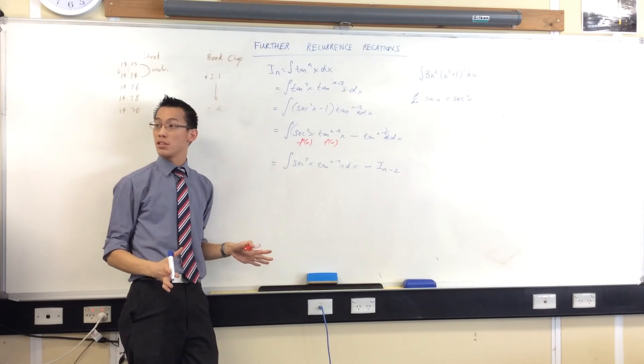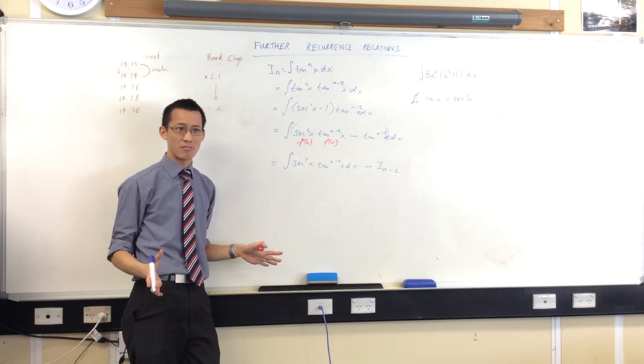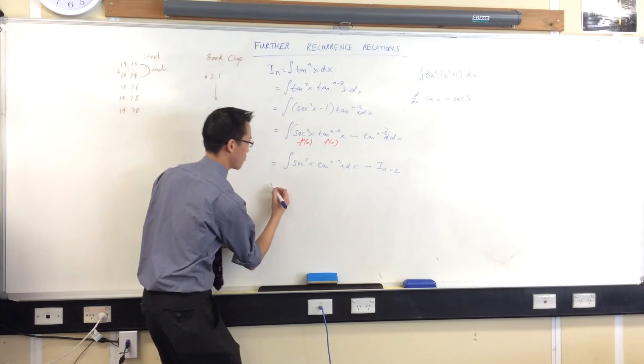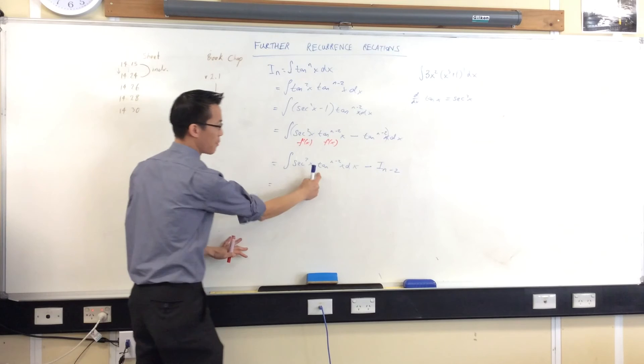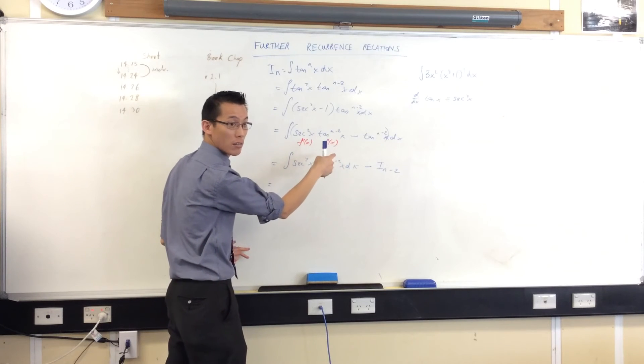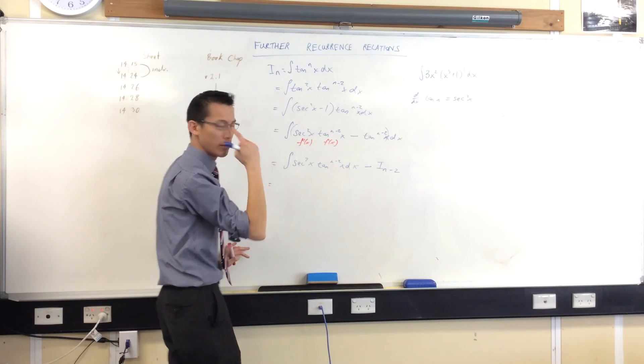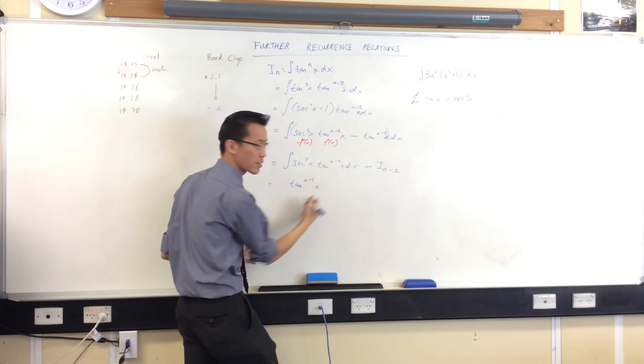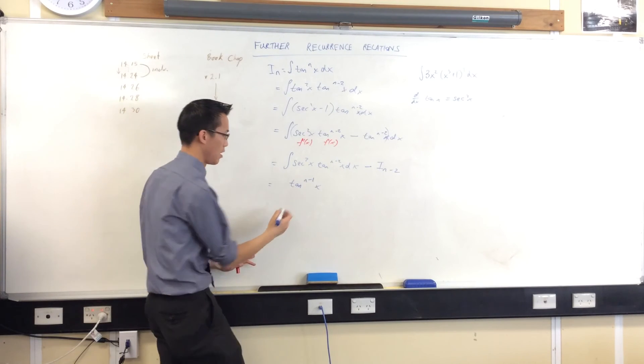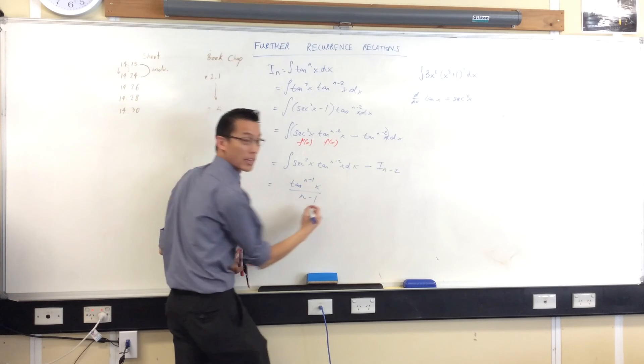What does this look like? Do we need to do the substitution to make sure we get it right? Or do you think you can do it in your heads? I think we can do it, right? What are you going to get? When you've integrated this, right? It's something to a power, right? So what's going to happen to it? It'll become n minus one. The power goes up. And then what? I have to divide by n minus one, right?